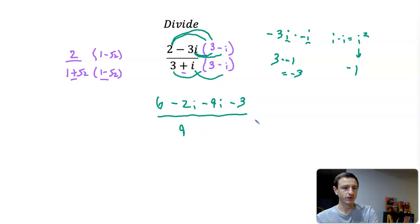And then i times negative i—1i times negative 1 is negative 1. I times i again is i squared. I squared is negative 1, so negative 1 times negative 1 is a positive 1. So we're going to get 9 plus 1. 3 plus i times 3 minus i ends up being 9 plus 1.